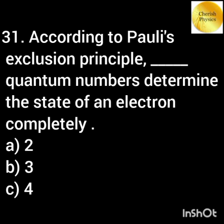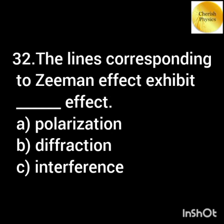According to Pauli's exclusion principle, four quantum numbers determine the state of an electron completely. The lines corresponding to the Zeeman effect exhibit the Doppler effect.